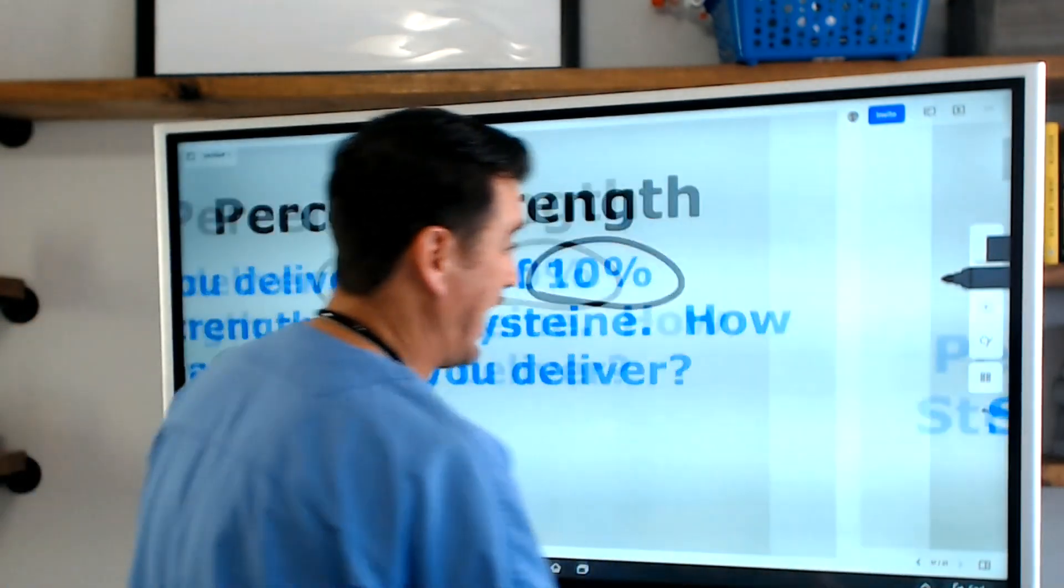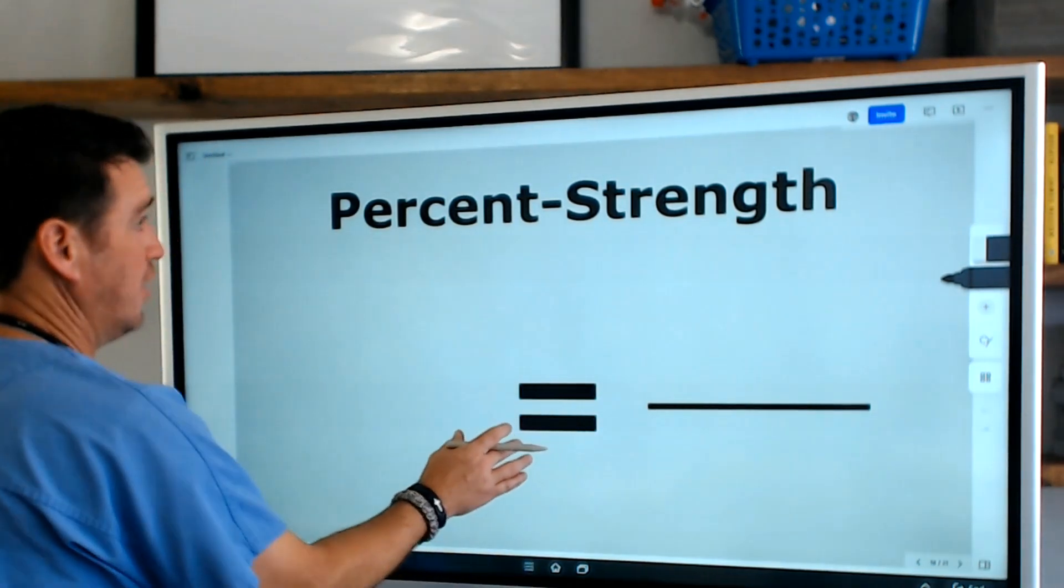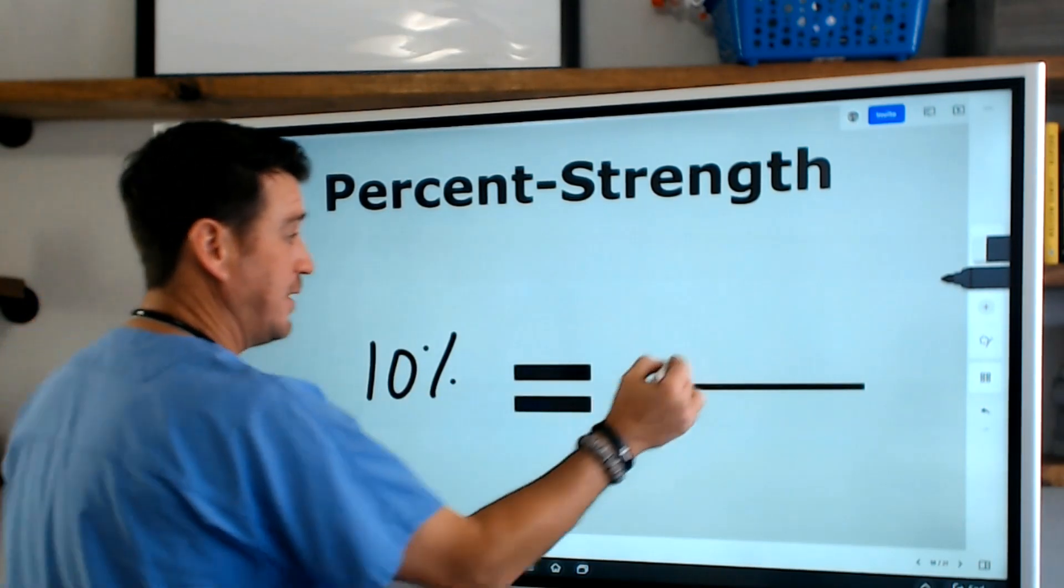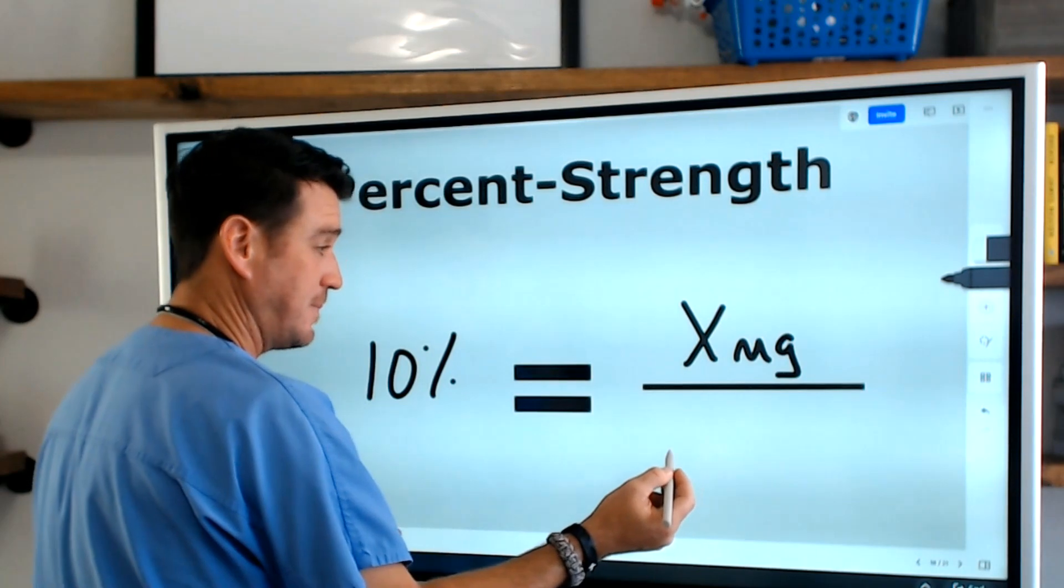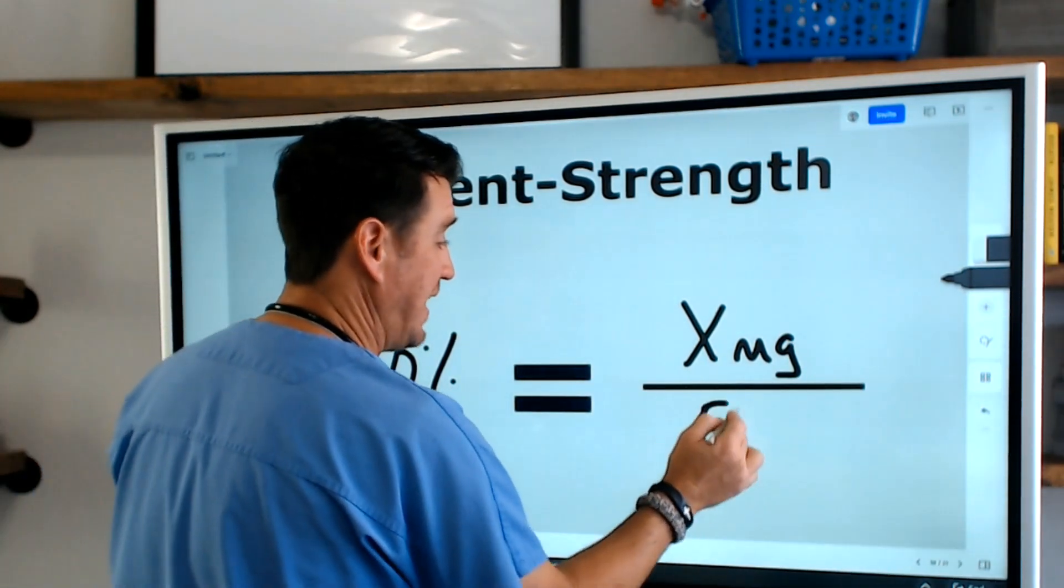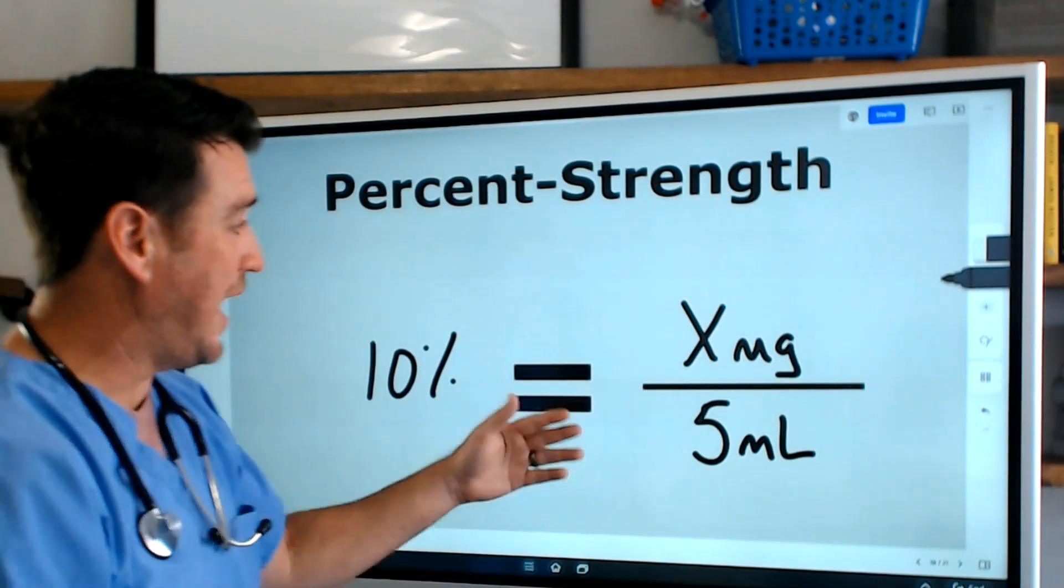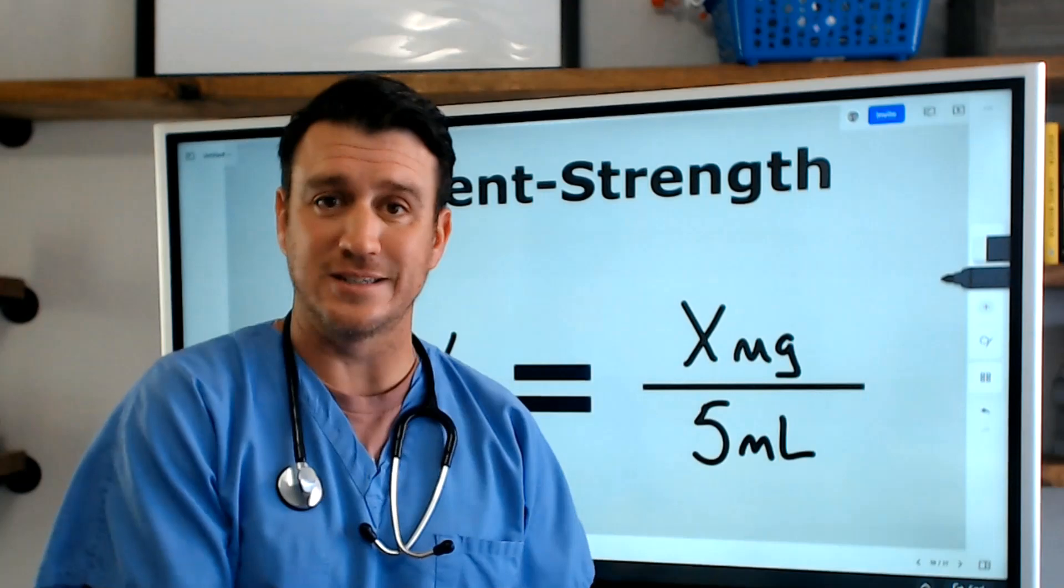So we go back and say okay, we know the formula now. We are working with a 10 percent strength. We don't know the milligrams—that's the question—but we gave 5 milliliters of the 10 percent strength. So how many milligrams did we deliver of this acetylcysteine?